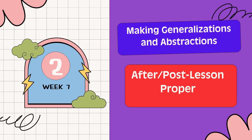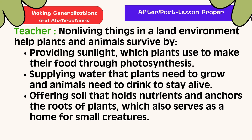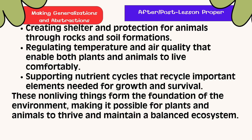Making Generalization and Abstraction. Non-living things in a land environment help plants and animals survive by providing sunlight, which plants use to make food through photosynthesis; supplying water that plants need to grow and animals need to drink; offering soil that holds nutrients and anchors the roots of plants, which also serves as a home for small creatures; creating shelter and protection through rocks and soil formations; regulating temperature and air quality; and supporting nutrient cycles that recycle important elements. These non-living things form the foundation of the environment, making it possible for plants and animals to thrive and maintain a balanced ecosystem.